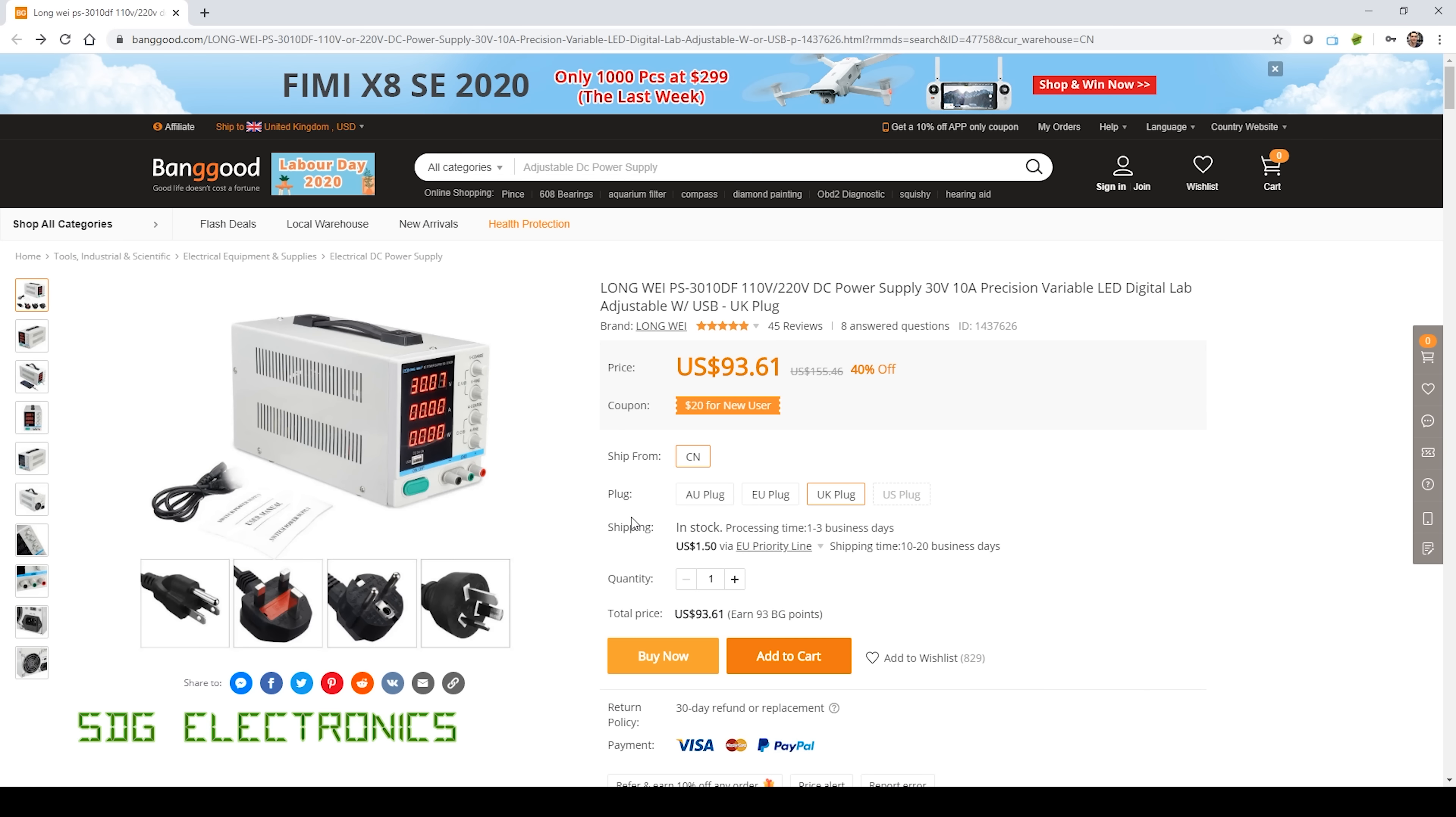So here it is on Banggood, currently retailing for $93, but if you look for a discount code, you'll probably find 15 or 20% off, which gets it even cheaper. You can choose what type of power lead is provided with it, but it does just have a standard IEC socket on the back, which means that you can use your own power cord and then you can use something either more substantial or more suitable cable length.